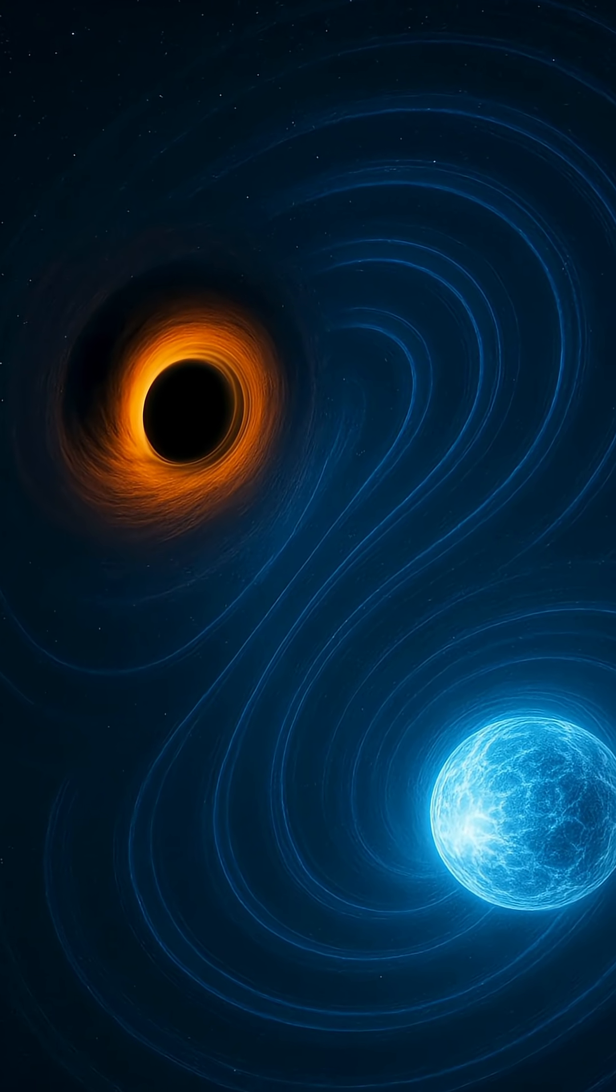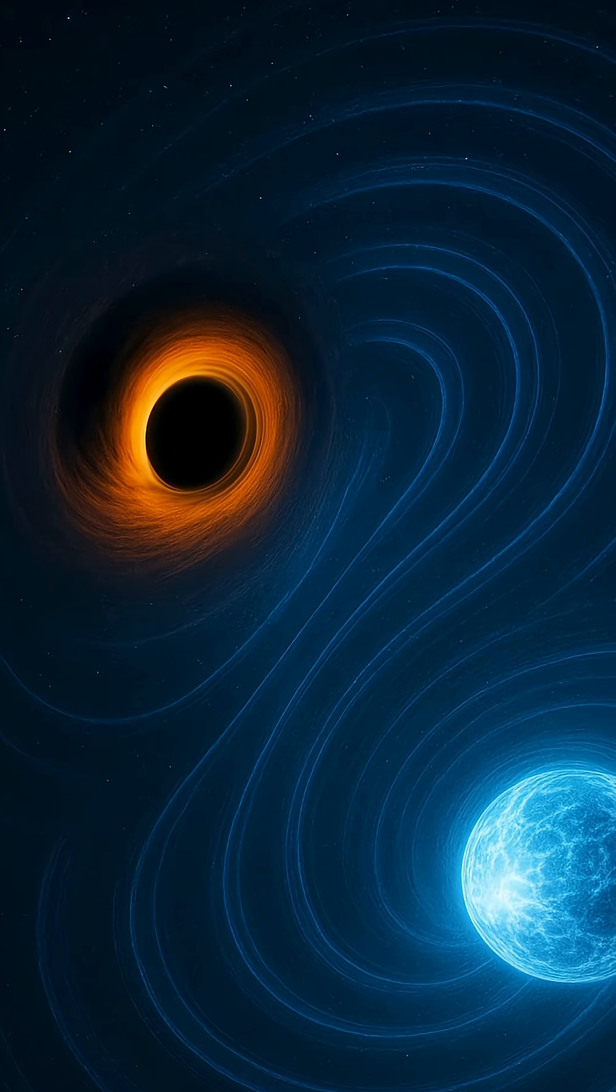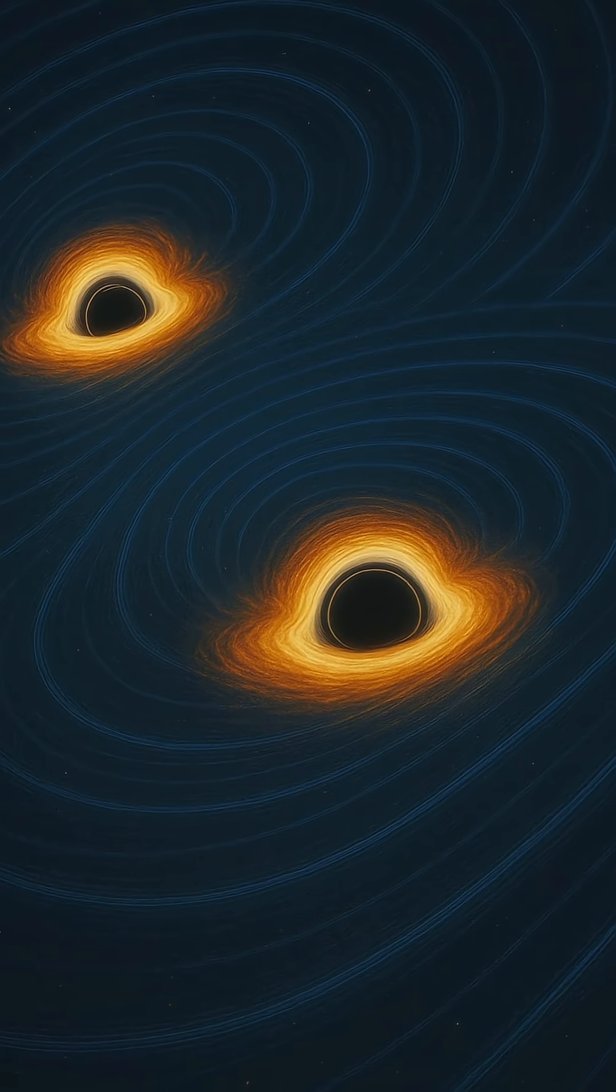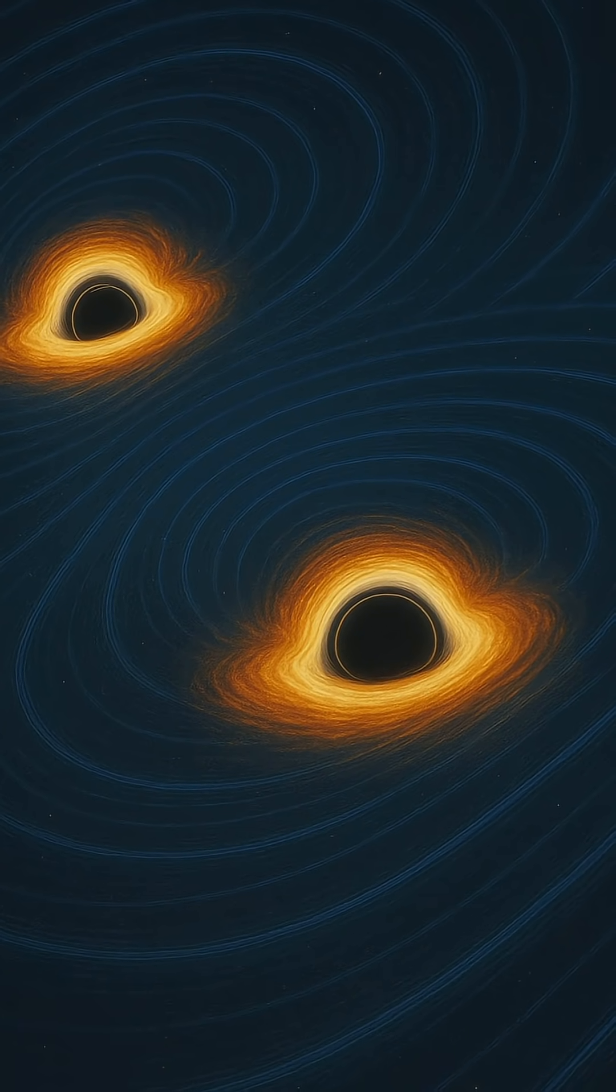When LIGO, the Laser Interferometer Gravitational Wave Observatory, first picked up this faint signal, it changed how we observe the universe forever. The cause? A cataclysmic collision of two black holes over a billion light-years away, merging in a silent but violent dance and sending out waves that stretched and squeezed space itself.